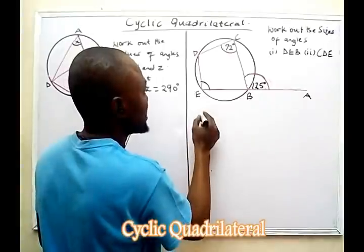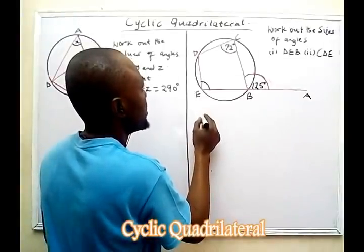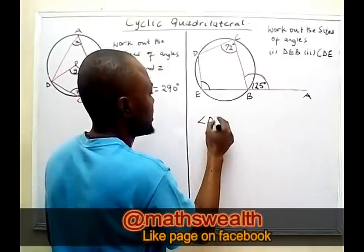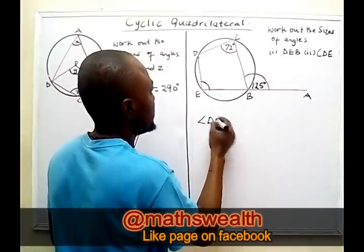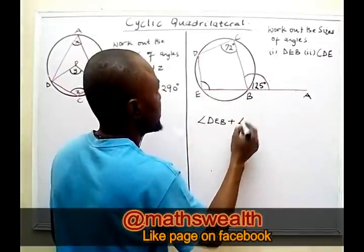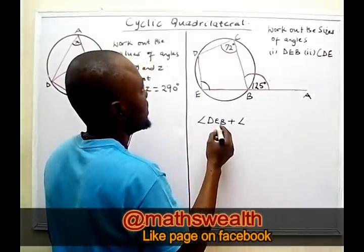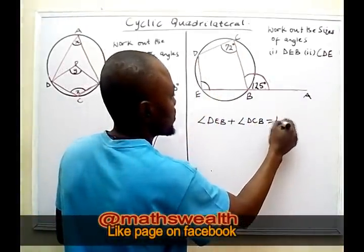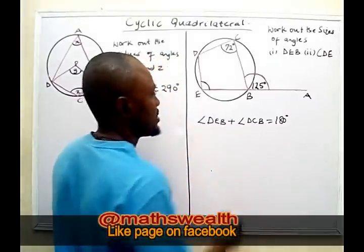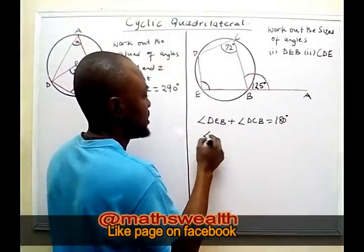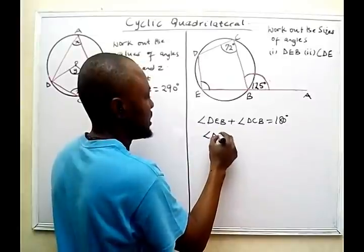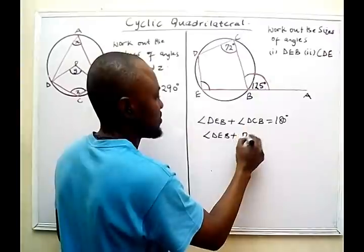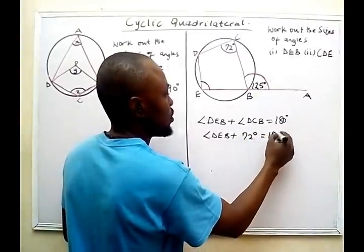So I can therefore say that angle DEB plus angle DCB equals 180 degrees. I want to find angle DEB, so: angle DEB plus angle DCB, which is 72 degrees, equals 180 degrees.